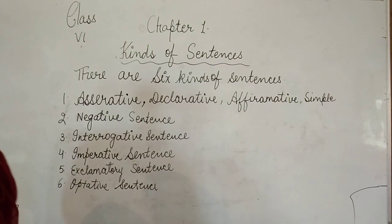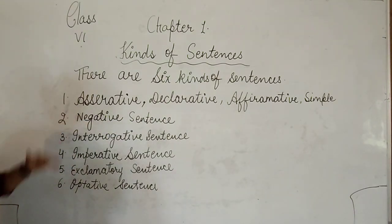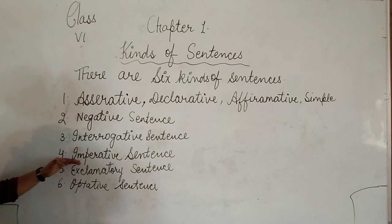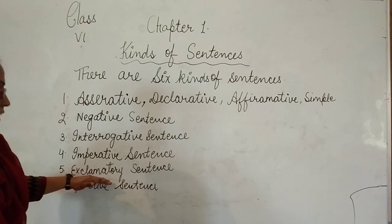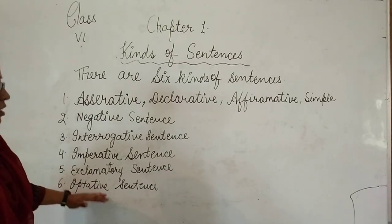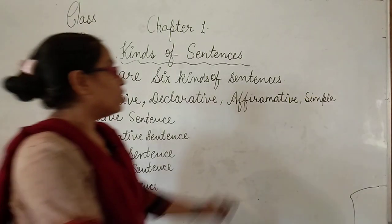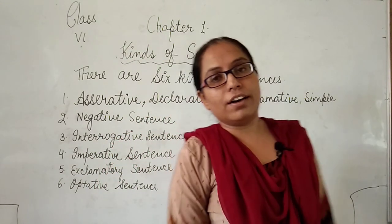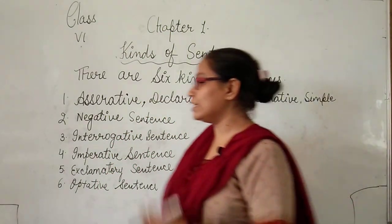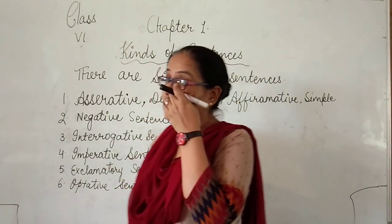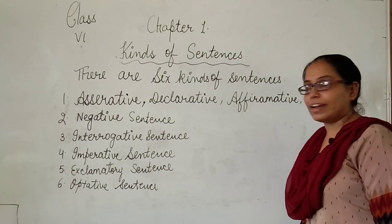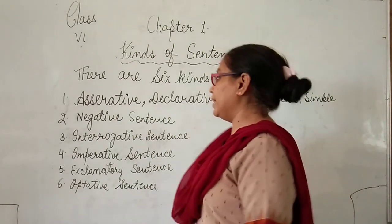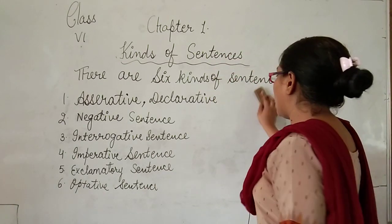The second kind of sentence is the negative sentence. The third is the interrogative sentence. The fourth is the imperative sentence. The fifth is the exclamatory sentence. And the sixth is the optative sentence. So in English grammar, there are six types of sentences: assertive, negative, interrogative, imperative, exclamatory, and optative.